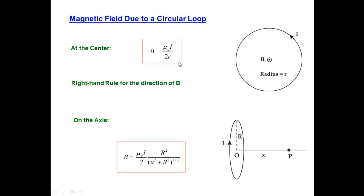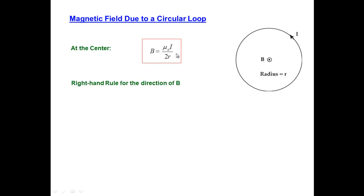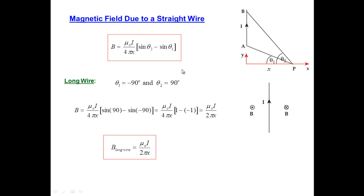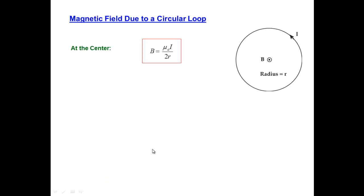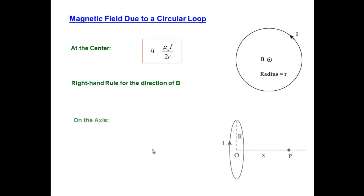So these results are very important. The magnetic field due to a general straight wire is given by the angle-based equation. For a very long wire with angles going to ±90°, we get the simplified expression. Then there's the field at the center of a circular loop, and on the axis of a circular loop. These four equations are useful and will be used to answer many of the homework problems.